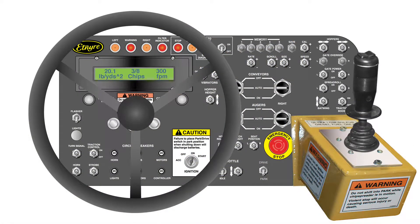Welcome to the computer setup screens tutorial. The computer must be set up and the various sensors calibrated for the particular chip spreader that the computer is installed in. This is normally done at the factory and the settings are retained in the computer's non-volatile memory. Normally an entire setup does not have to be done in the field, but if a joystick or a gate transducer is replaced, that particular item would have to be recalibrated.